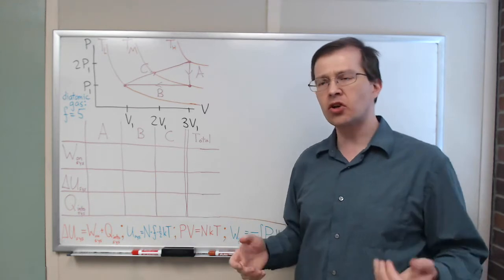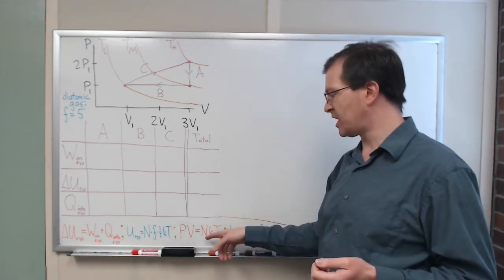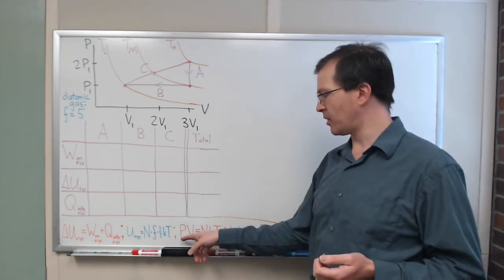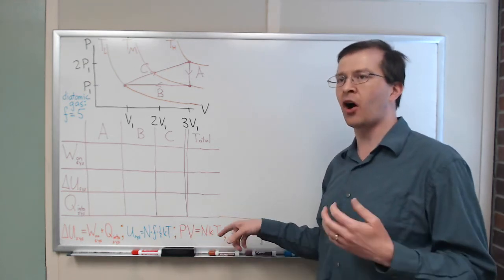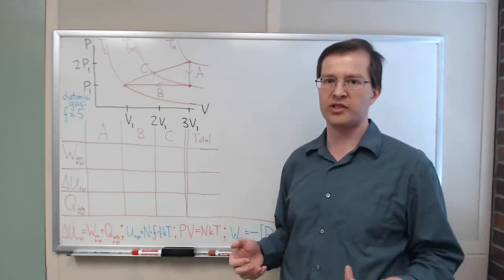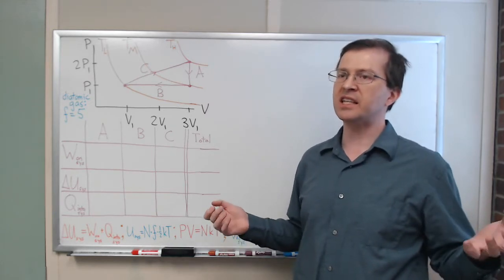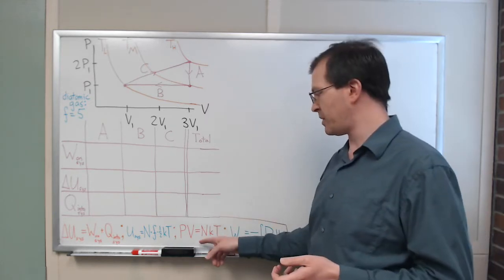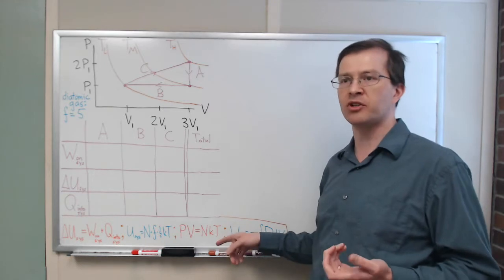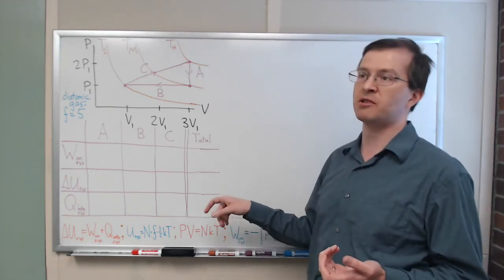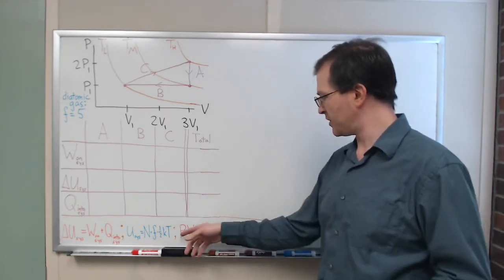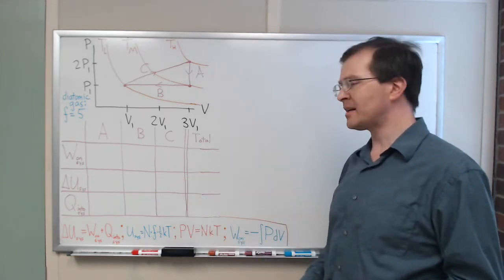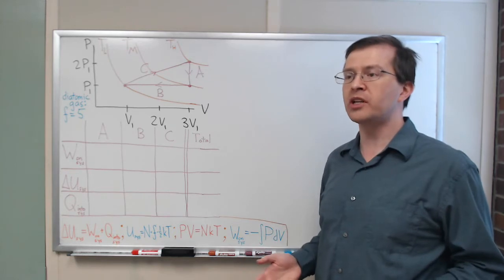We'll think in terms of the ideal gas law, PV equals NKT. The pressure times the volume equals, now, chemists would do little n RT, where little n is the number of moles of the material. Physicists tend to think in terms of particles. So, big N is the number of particles. K is Boltzmann's constant. Little n times R is the same as big N times K. They're just where you count differently. We've got the ideal gas law.